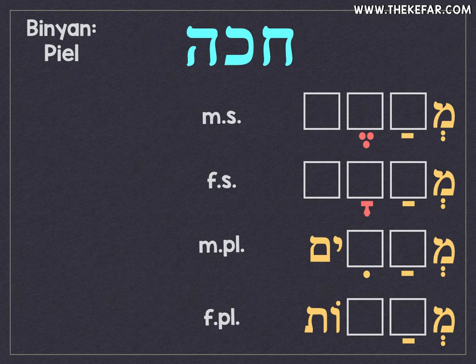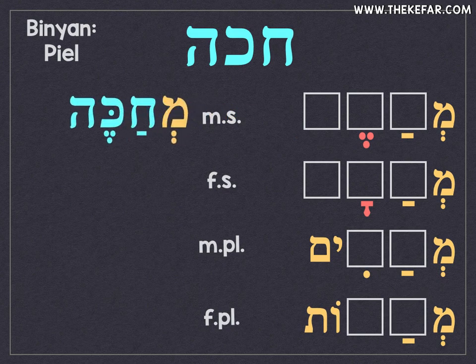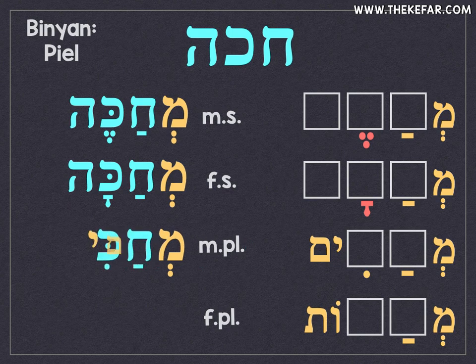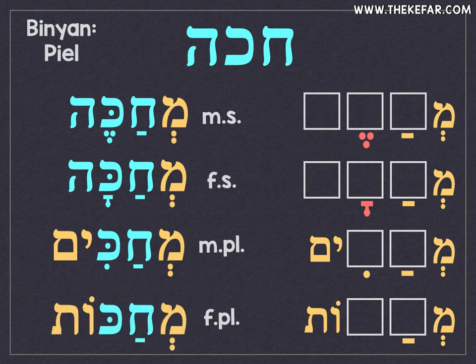Plugging in the Shoresh letters: masculine singular is M'Chakeh; feminine singular is M'Chaka — same spelling but a different vowel under the Kaf. Masculine plural is M'Chakim — the final Hei drops out. Feminine plural is M'Chakot — also without the final Hei.